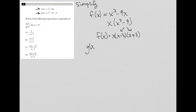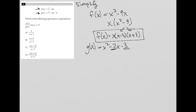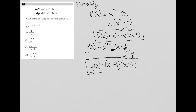Now for g(x). I'm going to box this so I have it. My g(x) starts as x² - 2x - 3 — a trinomial. Whenever I'm factoring a trinomial, I look at the last term and ask: are there two numbers that multiply to equal the last term and add up to equal the middle term? Yes — negative 3 times positive 1 equals negative 3, and negative 3 plus 1 equals negative 2. So the factored form of g(x) is (x - 3)(x + 1).